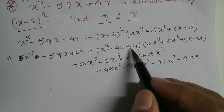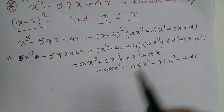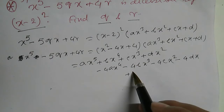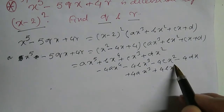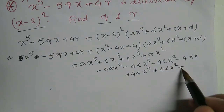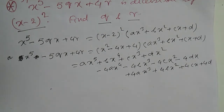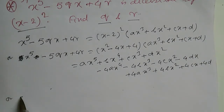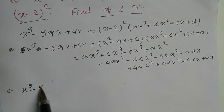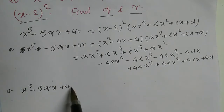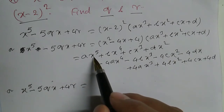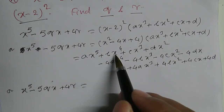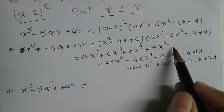Then multiplying by minus 4x we get minus 4ax to the power 4 minus 4bx cubed minus 4cx squared minus 4dx. Lastly, multiplying by 4, we get 4ax cubed plus 4bx squared plus 4cx plus 4d.